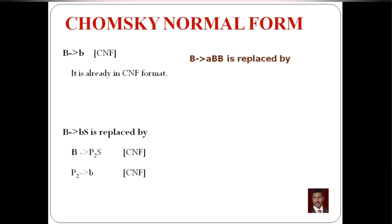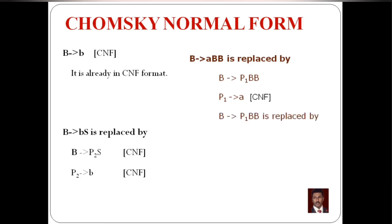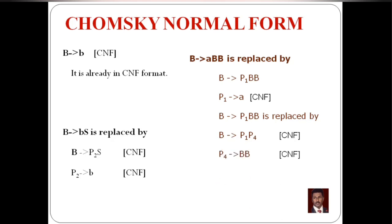The next production is B tends to ABB. There are three symbols. We replace the first terminal a — we already substituted P1 for a — giving B tends to P1BB. But that has three non-terminals, not CNF. So we replace BB with P4, giving B tends to P1P4 — two non-terminals, which is CNF. Then P4 tends to BB, where there are two non-terminals — so this is CNF.